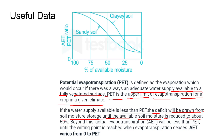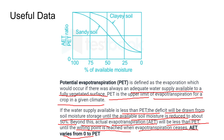Once soil moisture is reduced to about 50 percent, the actual evapotranspiration (AET) will be less than PET, until the wilting point is reached when evapotranspiration ceases. Therefore, AET varies from 0 to PET.